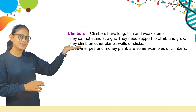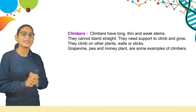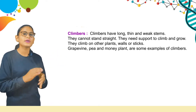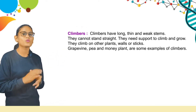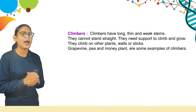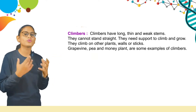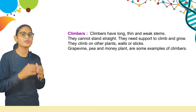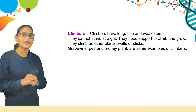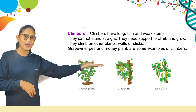Now we will discuss climbers. Climbers have long, thin, and weak stems. They cannot stand straight. They need support to climb and grow. They climb on other plants, walls, or sticks. Grapevine, tea, and money plant are some examples of climbers. Here are some pictures: money plant, grapevine, and tea plant.